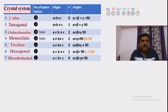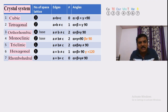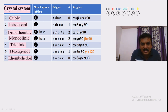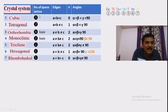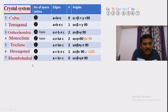In rhombohedral, alpha = beta = gamma but they are not equal to 90°. Comparing cubic and rhombohedral: both have a = b = c, but in cubic all angles are 90°, whereas in rhombohedral alpha = beta = gamma ≠ 90°. In this way we have seen all 14 Bravais lattices — the 14 systems with which atoms or molecules can be arranged. To remember the number of space lattices: cubic has 3, tetragonal has 2, orthorhombic has 4, monoclinic has 2, and the remaining three each have 1.